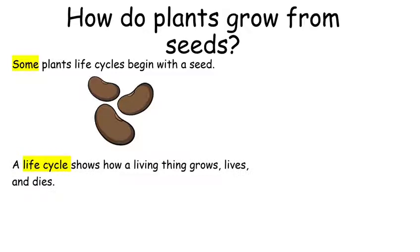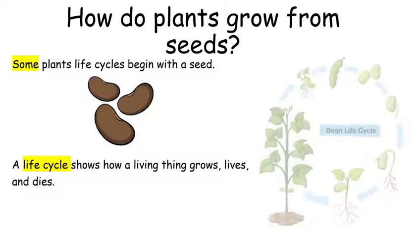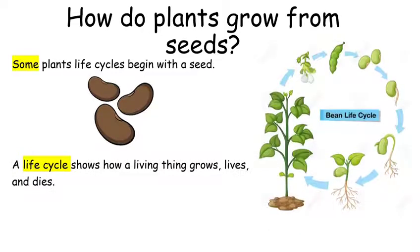A life cycle shows how a living thing grows, lives, and dies, as you can see in the picture. This is a life cycle of a bean.